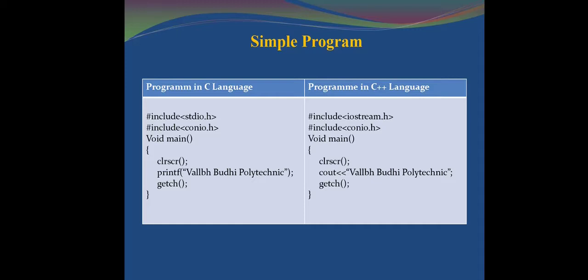Another difference is that in C we use printf — for example, to print 'Vallabhuti Polytechnic' — whereas in the C++ program, we write cout followed by the insertion operator and then 'Vallabhuti Polytechnic'. Both programs display the same message and produce the same output.